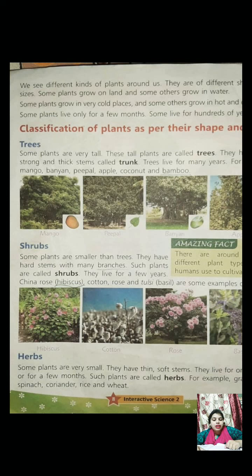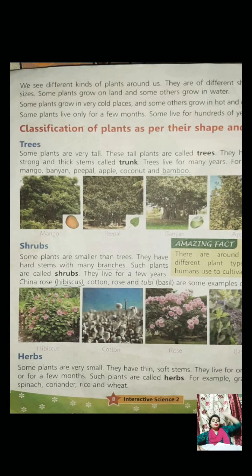Trees live for many years. Examples of trees are mango tree, banyan tree, peepal tree, apple tree, coconut tree, and bamboo trees. The peepal tree gives lots of oxygen to us. The mango tree gives us yummy fruits. The banyan tree is one of the oldest trees still present in our world. The coconut tree is a long, tall tree with that green fruit inside which has water that you drink. The bamboo trees are like long stick ones.